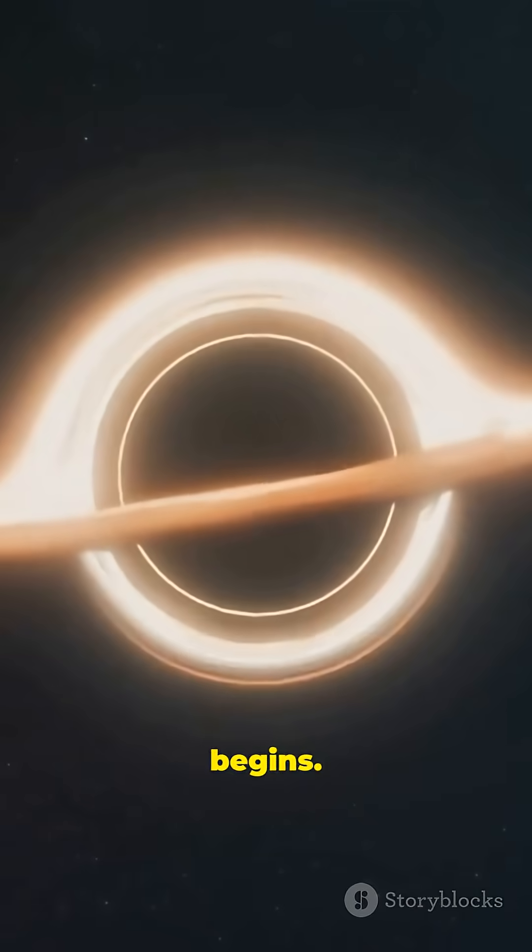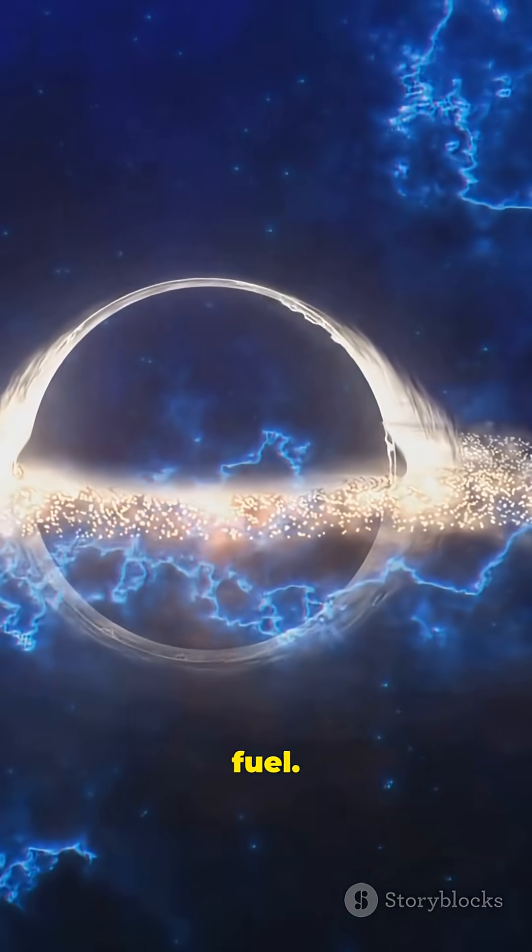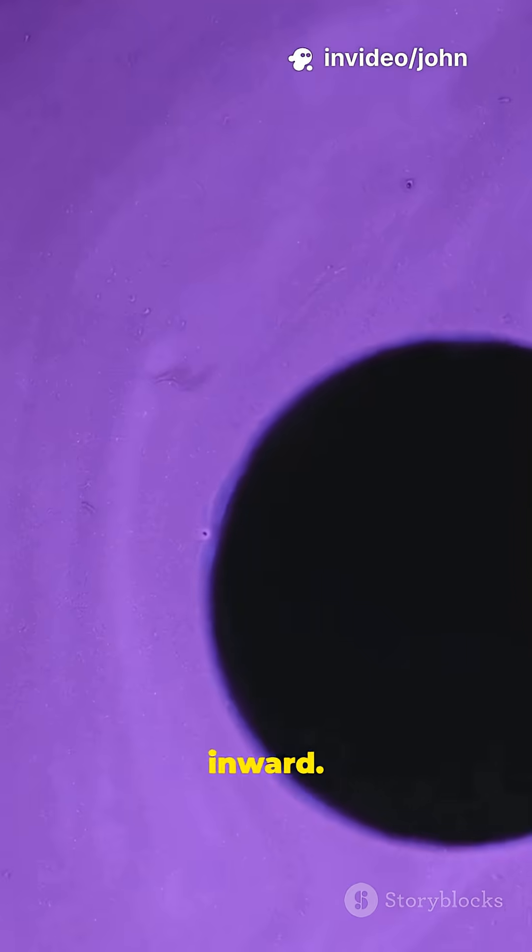Start simple. A black hole begins when a giant star runs out of fuel. Without energy pushing out, gravity wins and the core collapses fast, furious inward.